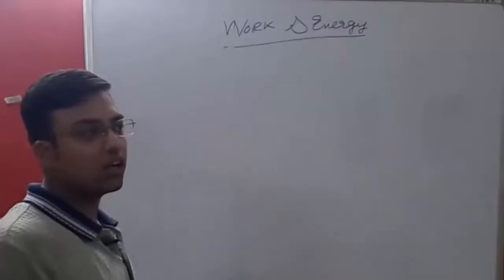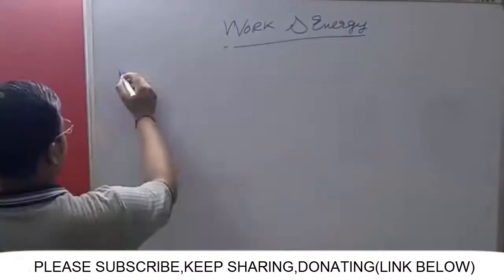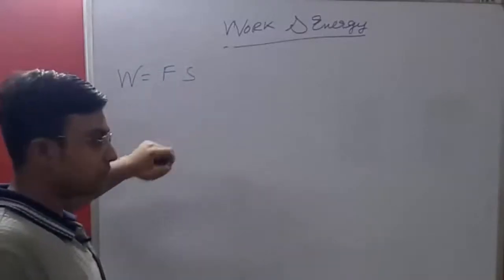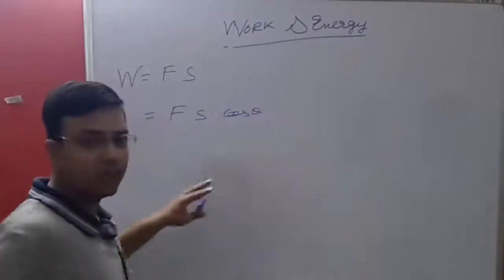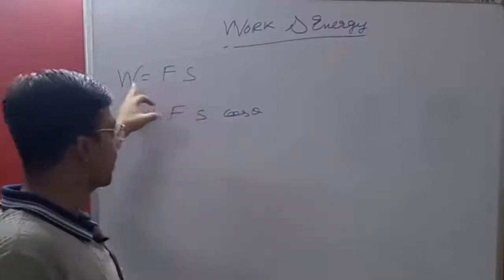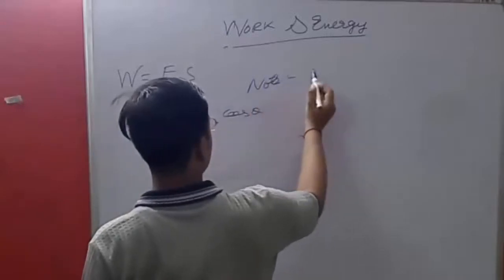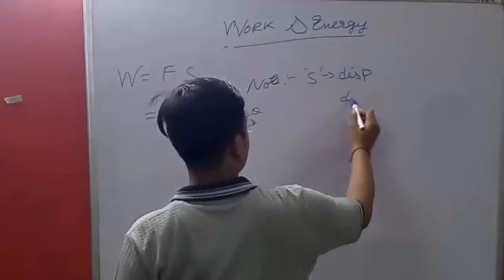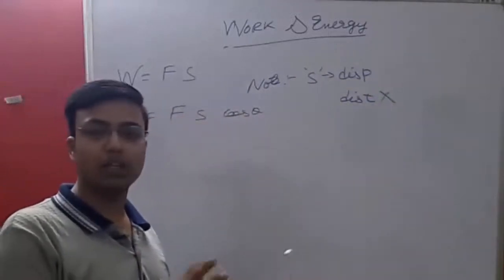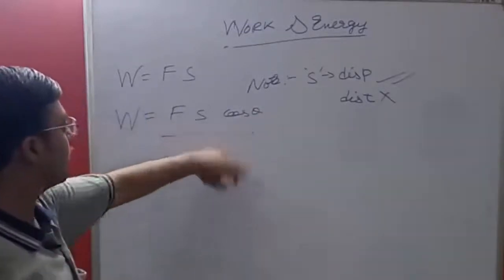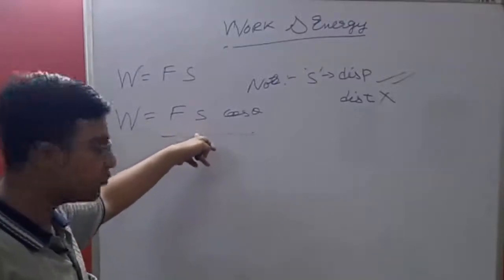Hello, good morning. Today I am going to tell you about work and energy. I will go through all the concepts and the numericals in the NCERT. Before moving to the questions, I want to teach you an important concept. The formula for work in NCERT is given as F dot S — it is dot product, not simple multiplication. If opened, it is F·S·cosθ. Here F is the force and S is the displacement — note that S is displacement, not distance. Displacement is the shortest distance between two points.